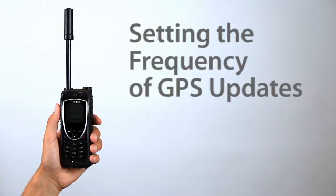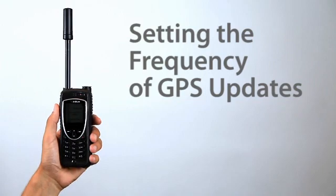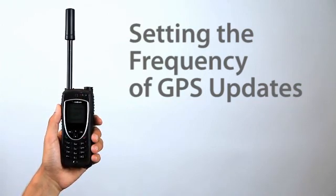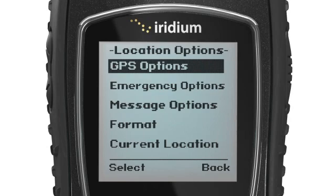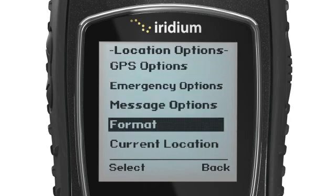Once your GPS is enabled, you can view and share your current location and customize your settings. To view your GPS coordinates, select Location Options from the Setup menu and scroll to highlight Current Locations.